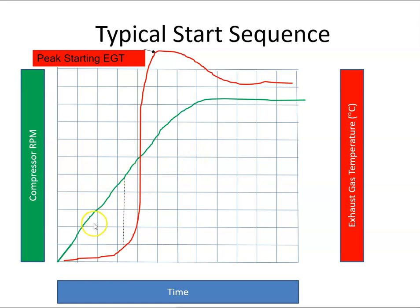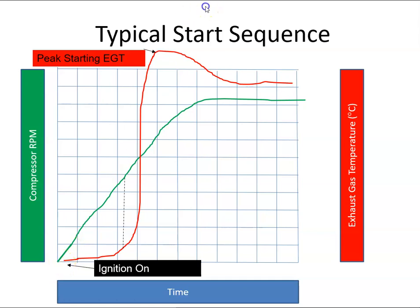In this screencast I just want to go over the typical start sequence. In the cockpit, the first thing that will happen is the pilot will switch on the ignition. The starter motor will begin to spool up, and when it spools up the engine RPM begins to increase. You can see the RPM beginning to go up here, and at a particular RPM there would be enough fuel pressure to open up the simplex or duplex valves in the fuel nozzles.